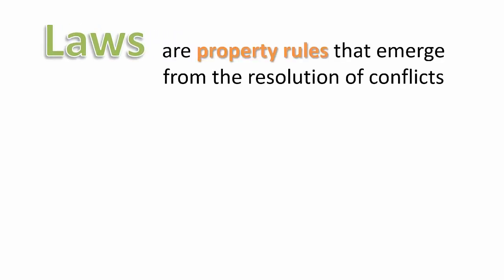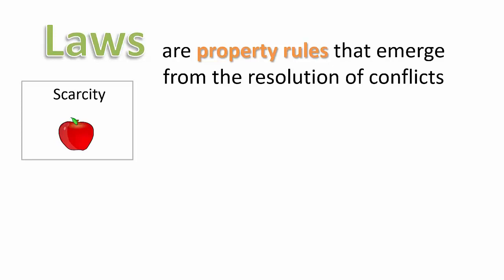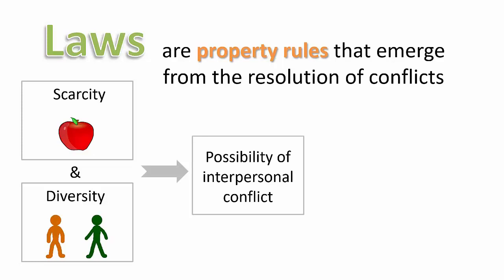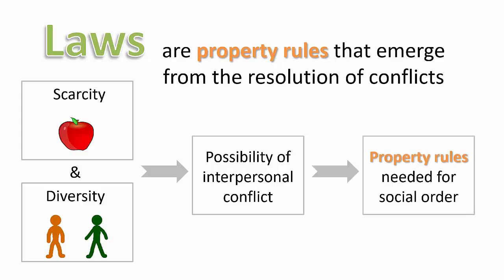Let's start by defining law. Laws are property rules that emerge from the resolution of conflicts. Two facts about the world explain why laws exist: scarcity of resources and diversity of interests between individuals. These two facts mean there is always a potential for interpersonal conflicts about resource usage. For conflict avoidance we need property rules to establish who has the ownership right over a resource — who has the right to decide how it is used. The production of these property rules, or laws, is the law industry. Laws emerge from the services provided by arbitrators asked for their opinion to help resolve a conflict.